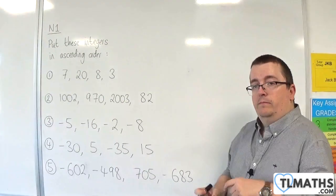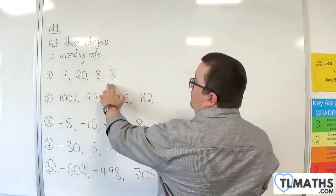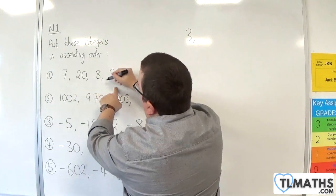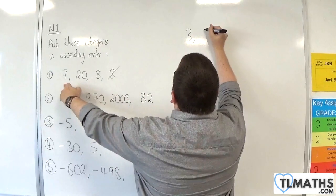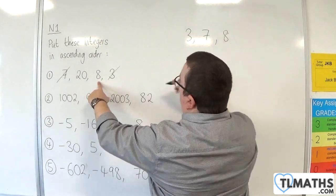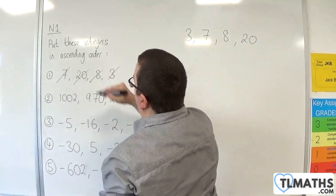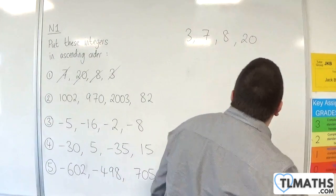First one, nice and basic. Start off with the smallest number, which is 3. You can cross them off as you go if you like. Then we're going to have 7, which is the next smallest, then 8, then 20. That's the first one, nice and easy.